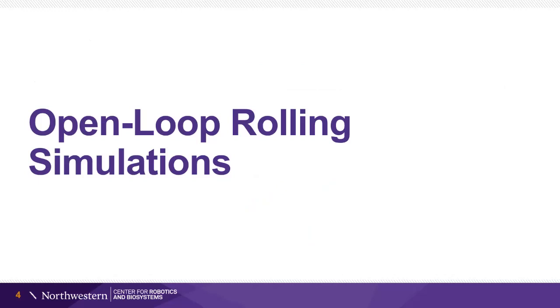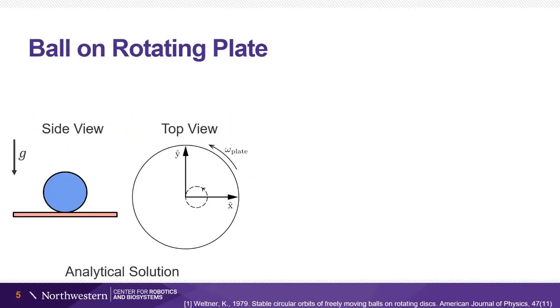We first demonstrate open-loop rolling simulations and compare to examples with analytical solutions. Consider a ball on a turntable rotating at a constant velocity. The ball follows a circular trajectory as derived analytically in the reference.